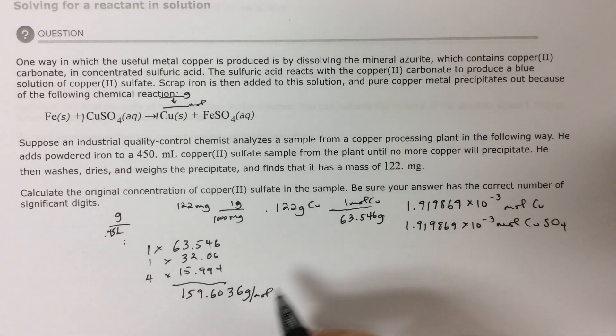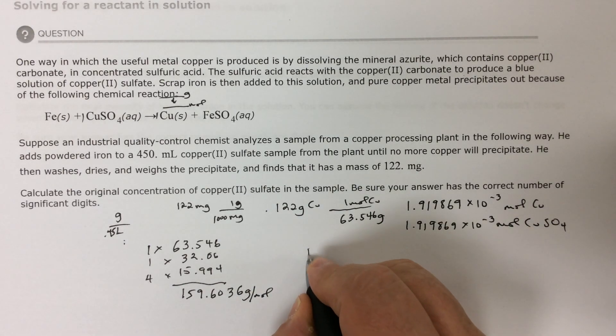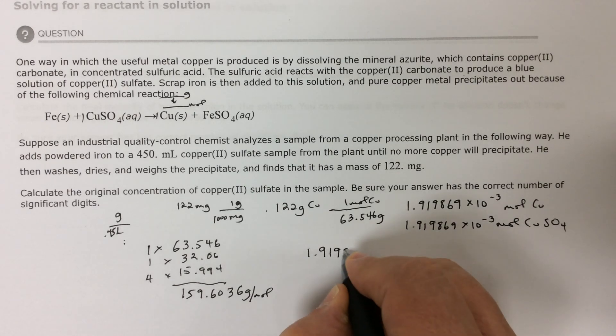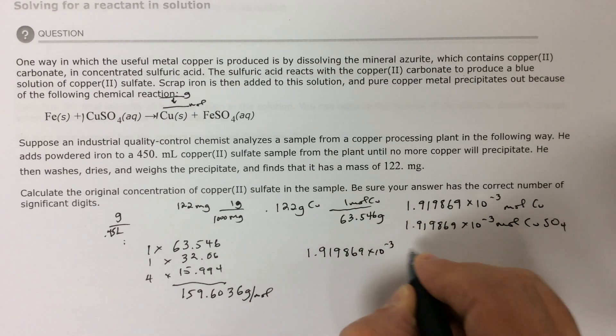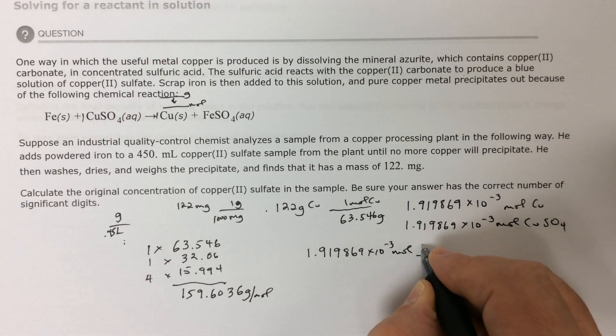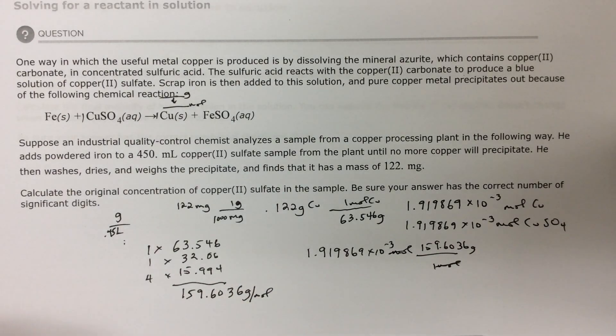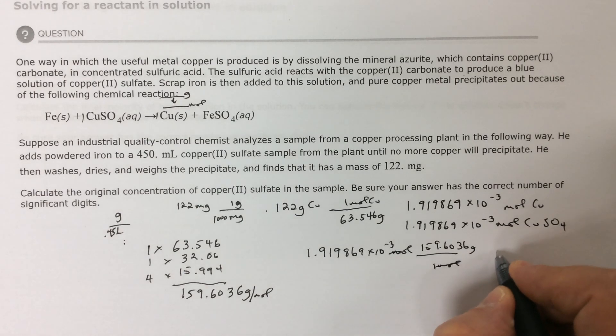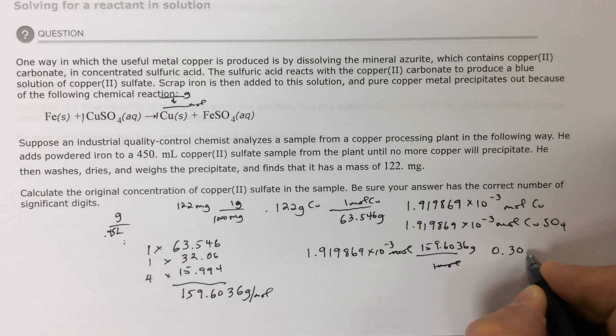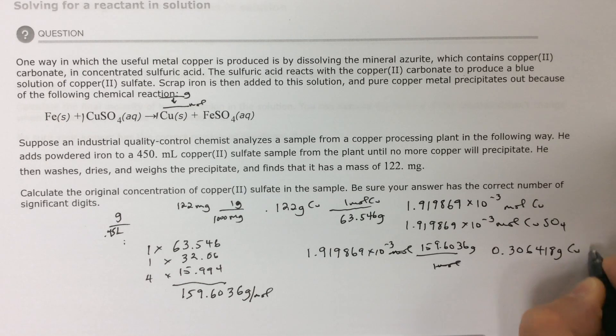All right, so I know how many moles, I know how many grams per mole. So I've got 1.919869 times 10 to the minus third moles. And in one mole, I've got 159.6036 grams. And the calculator says I should have 0.306418 grams of copper sulfate.